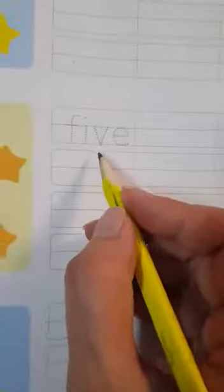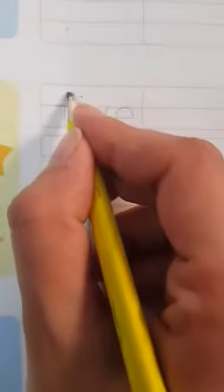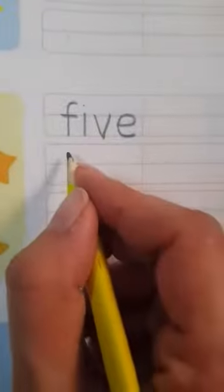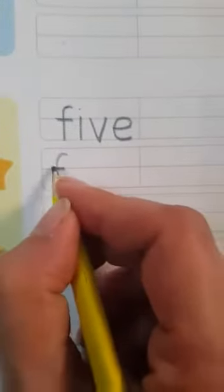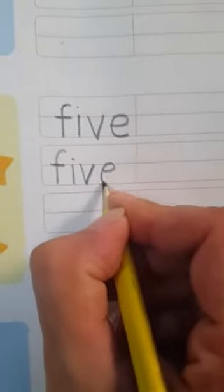5, five. First trace it. F-I-V-E, five. Now you write it down. F-I-V-E, five. So fill all the lines.